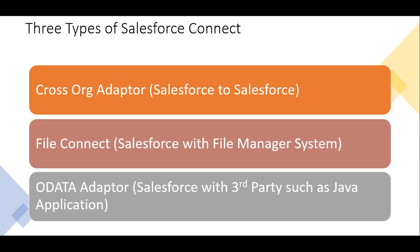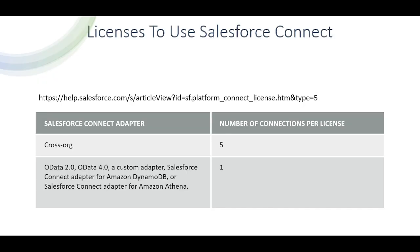There are three types of Salesforce Connect adapters. The cross-org adapter connects one Salesforce org with another. Files Connect is used to connect Salesforce with a file management system such as Google Drive. The third is the OData adapter, used to connect with third-party applications such as Java applications. Regarding licensing, one license allows you to connect with five orgs; to connect with seven Salesforce orgs you need two licenses. But if you need to connect with three Java applications, you need three licenses.